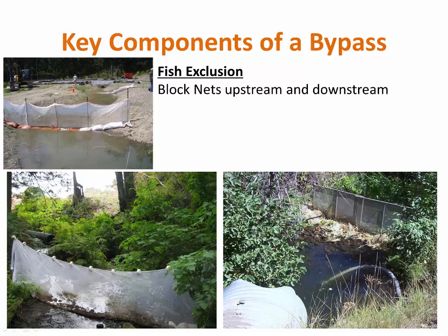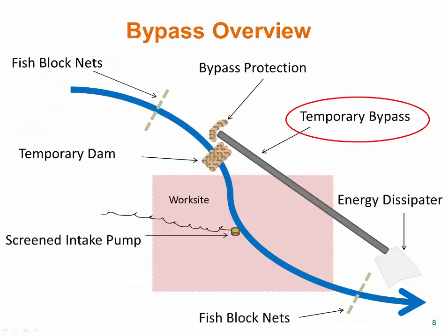Mesh nets are typically weighted at the bottom and need to be checked regularly to ensure they have not been breached or compromised. The ideal exclusion barrier is located in a low velocity area so that fish may approach the net or screen and swim away at will. After installation of the upstream block net, it is advantageous for the contractor to walk the second net downstream through the channel to sweep most of the fish out of the work area.